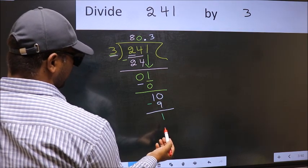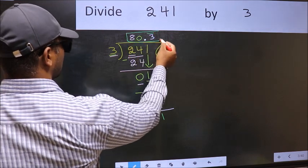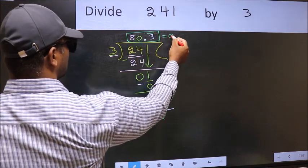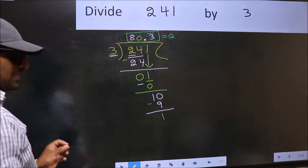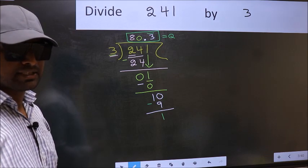We got 1 again. That means we get bar on this number. So, this is our quotient. Did you understand where the mistake happens? You should not do that mistake.